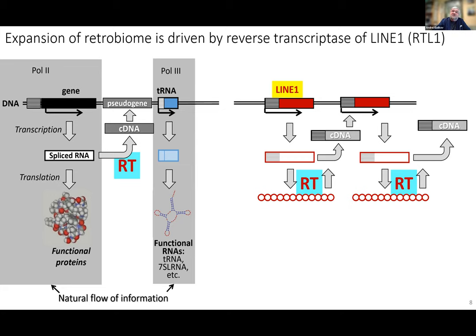The reverse transcriptase sometimes makes copies of mRNAs of normal genes, creating so-called pseudogenes. They are pseudogenes because they're non-functional — they have no introns and no promoters. We have several thousands of copies of these processed pseudogenes, which occupy quite a big proportion of our DNA, although they are completely silent.